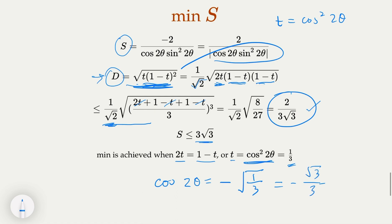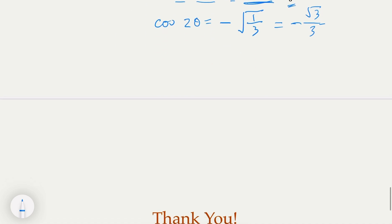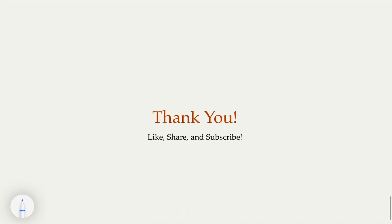So the area of the triangle is minimum with a minimum value of 3√3. That's the solution. Hope you followed the steps. Thank you for taking the time to follow this problem — it's an interesting one. Please like, share, and subscribe to the channel. Thank you.